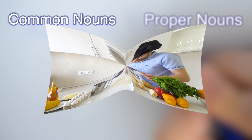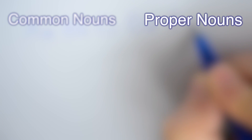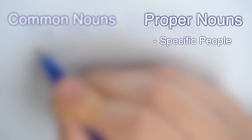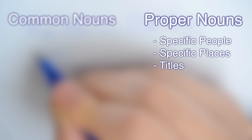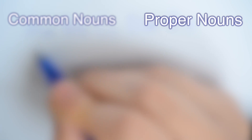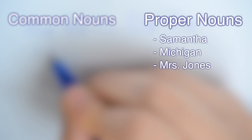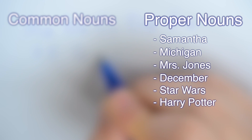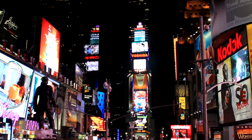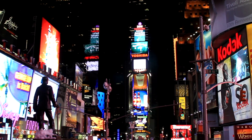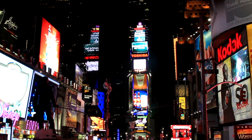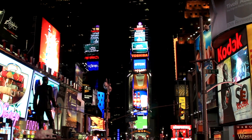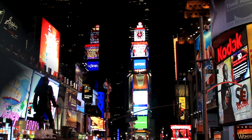Proper nouns, on the other hand, are specific people, places, titles, and objects — like your friend Samantha, or the state of Michigan, or your teacher Mrs. Jones, or the month of December, or movies and books like Star Wars or Harry Potter. These proper nouns are also everywhere. And once you understand the difference between them and common nouns, you'll start to really grasp when and why we use capitalization.